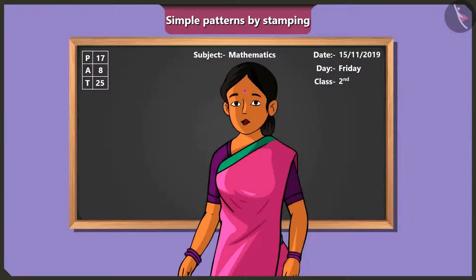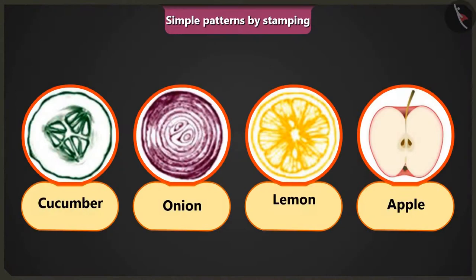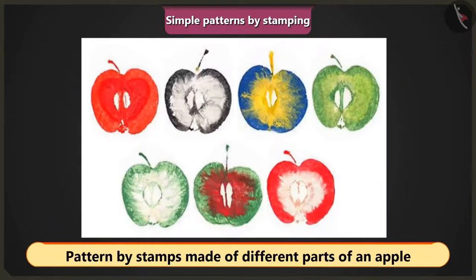Awesome. Very good, Jimmy. Children, we can make simple patterns by using other vegetables and fruits as well. All we need to do is cut them and either dip them in colour or apply colour on them. See how pieces of apple are used here as stamps to create a pattern by repeating the design.